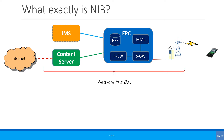If an IMS network is needed for VoLTE calls, that would also be part of NIB, but many NIBs don't contain the IMS as this can create a bottleneck — so the IMS server is optional. The content server, which also contains an application server, holds applications needed for whatever purpose, and these applications will also have to be installed on the handsets. Android devices are always used as part of this because you can install applications designed for any particular scenario.